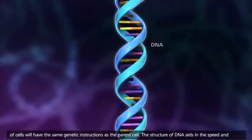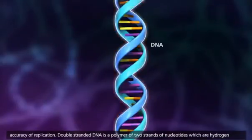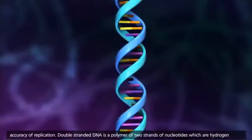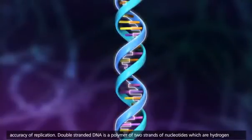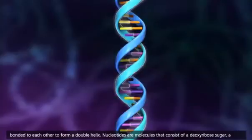The structure of DNA aids in the speed and accuracy of replication. Double-stranded DNA is a polymer of two strands of nucleotides, which are hydrogen bonded to each other to form a double helix.